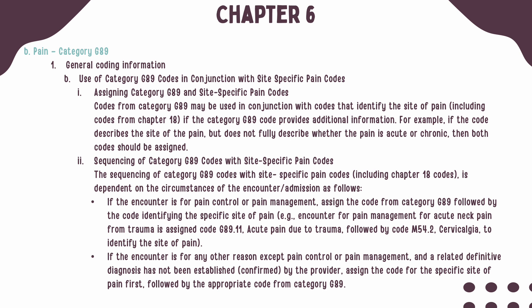When coding with other chapters, be aware of the following sequencing rules. If the encounter is for pain control or pain management, G89 should be listed first, followed by a code identifying the specific site of the pain. If the encounter is for any reason other than pain management or pain control, and there is no definitive diagnosis available, you should assign the code for the specific site first, followed by a code from Category G89.